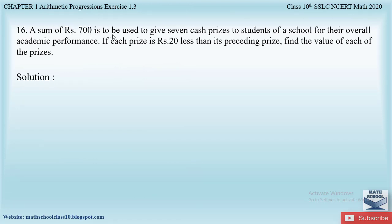Question 16 says: A sum of rupees 700 is to be used to give seven cash prizes to students of a school for their overall academic performance. If each prize is rupees 20 less than its preceding prize, find the value of each of the prizes. So we have a total sum of rupees 700 to be distributed as seven cash prizes.